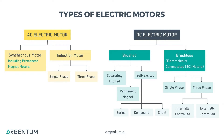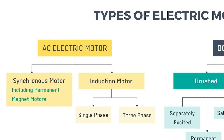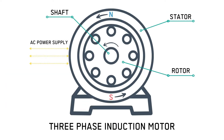These two types are further broken down into other types. The main two types of alternating current, or AC, motors are synchronous motors or induction motors, which are asynchronous. When a motor is asynchronous, it means that the magnetic field of the motor's stator and rotor rotate at different speeds to generate torque. When a motor is synchronous, the magnetic fields rotate at the same speed to generate torque.